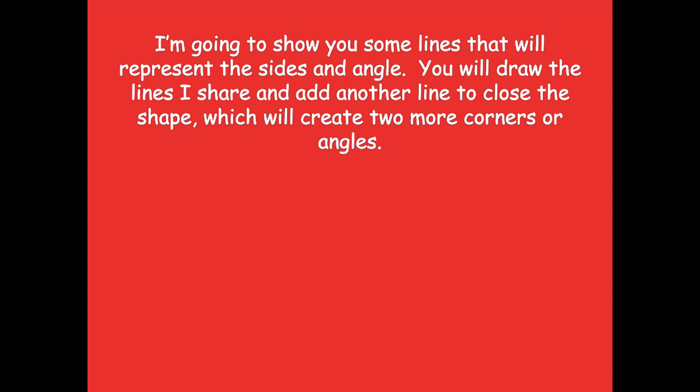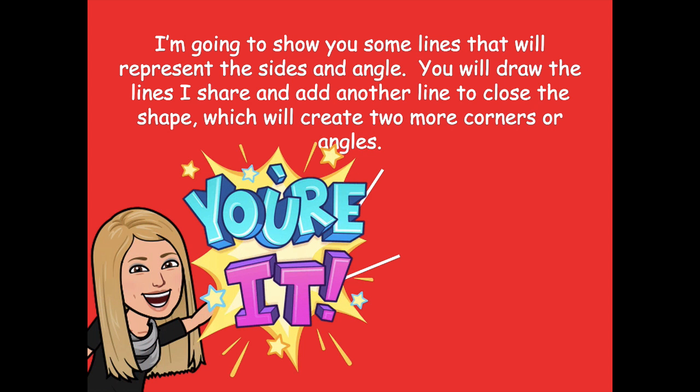The next thing: I'm going to show you some lines that will represent the sides and angles. You will draw the lines I share and add another line to close the shape, which will create two more corners or angles. So here I have these two lines — where could you draw another line that would close this shape? Pause the video, draw my two lines on your board, add another line to close the shape, then click play.